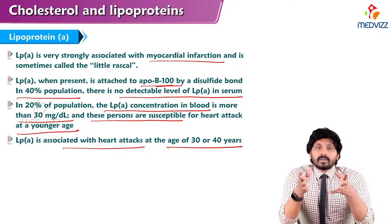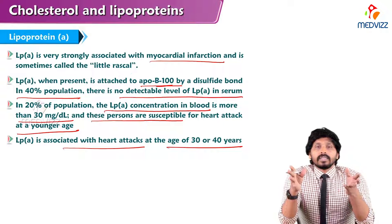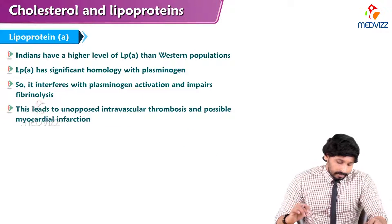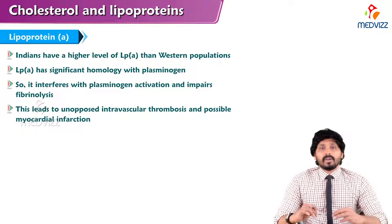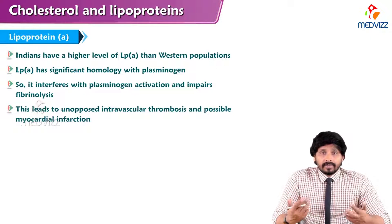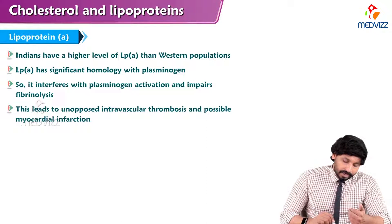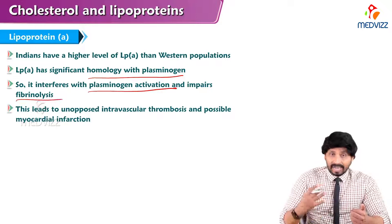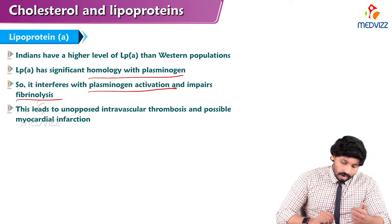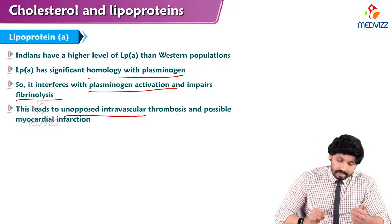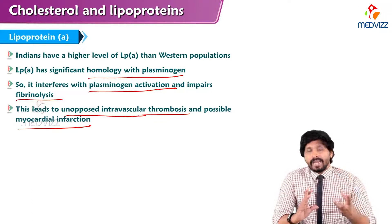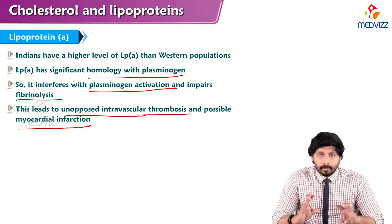The LDL is taken up by macrophages, forming white flakes — atherotic plaques — causing blockage in the arteries, especially in the heart. Indians have higher levels of lipoprotein(a) than the western population. Lp(a) has significant homology with plasminogen, and therefore interferes with plasminogen activation and impedes fibrinolysis. This leads to unopposed intravascular thrombosis and possible myocardial infarction — that is the main disadvantage of lipoprotein(a).